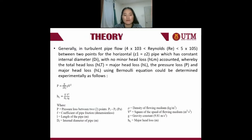For turbulent head flow between two horizontal points with constant cross-section and no minor head loss accounted, the total head loss is equal to the major head loss. The pressure loss and major head loss using the Bernoulli equation could be determined experimentally. Pressure loss is equal to the friction factor multiplied by rho multiplied by the square of speed, divided by 2 times the internal diameter.